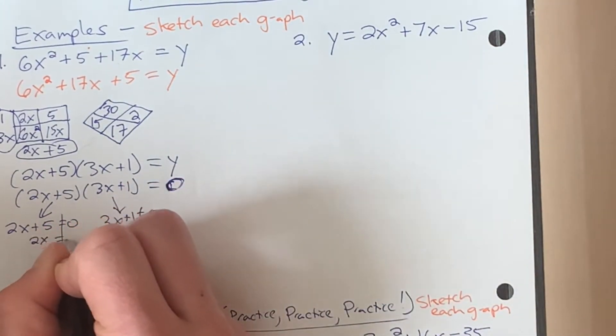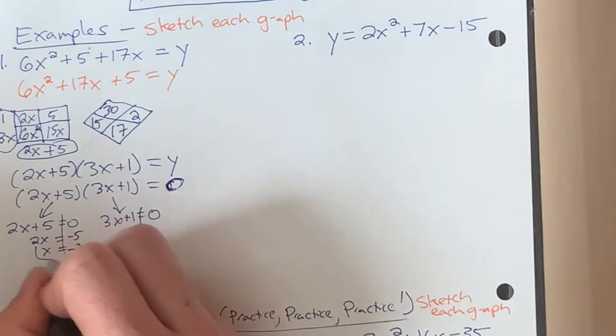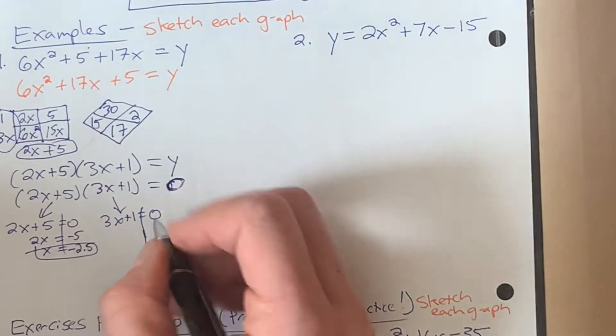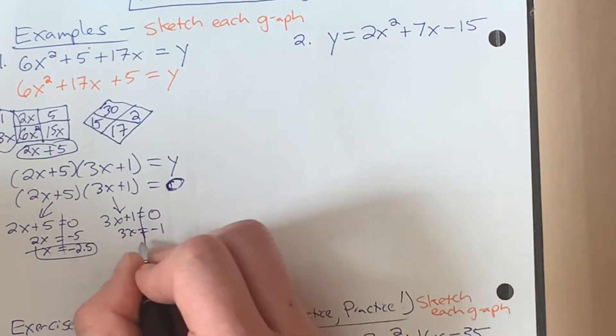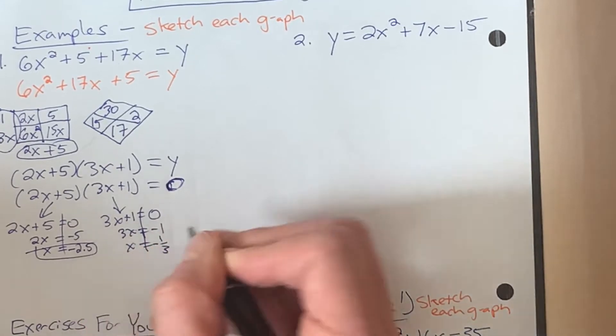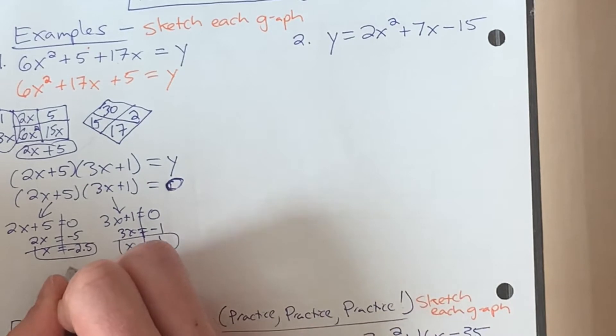So we're using the zero product property to determine our x-intercepts. 2x equals negative 5, so x would have to be negative 5 halves here, or negative 2.5 for one of our x-intercepts. And the other x-intercept is gonna have to be 3x equal to negative 1, divide both sides by 3, x would have to equal negative one third. So those are our x-intercepts.